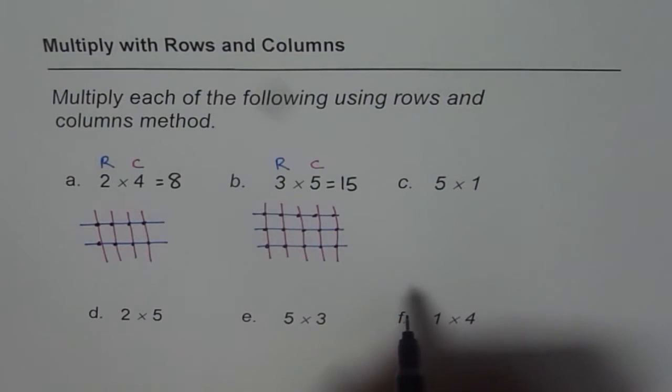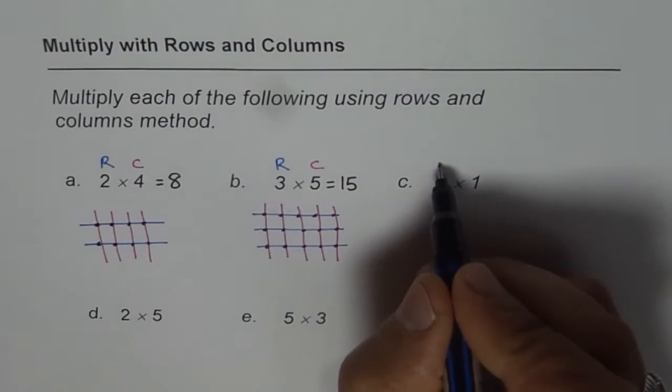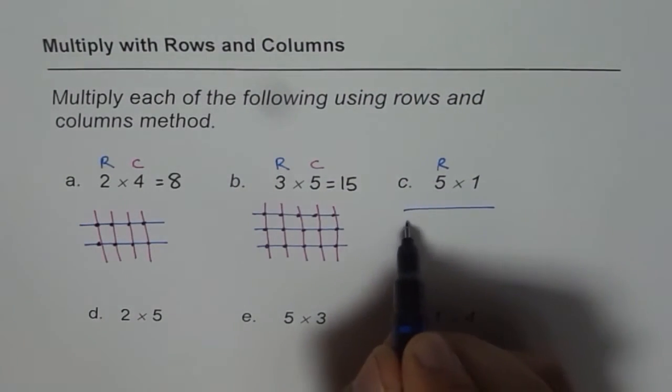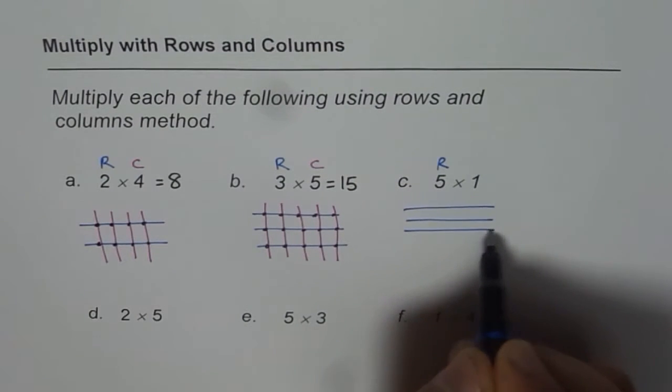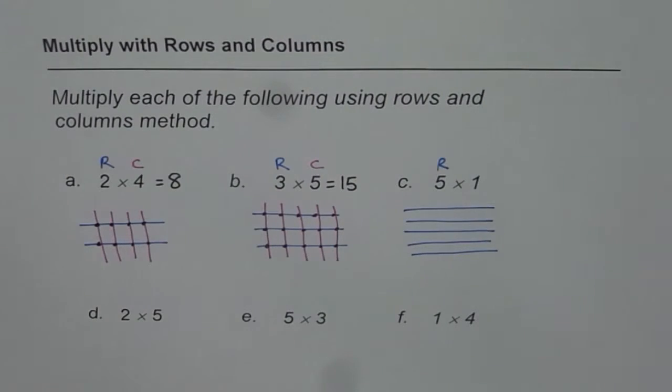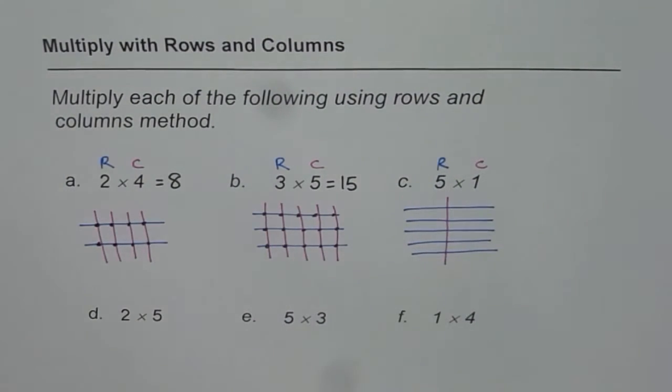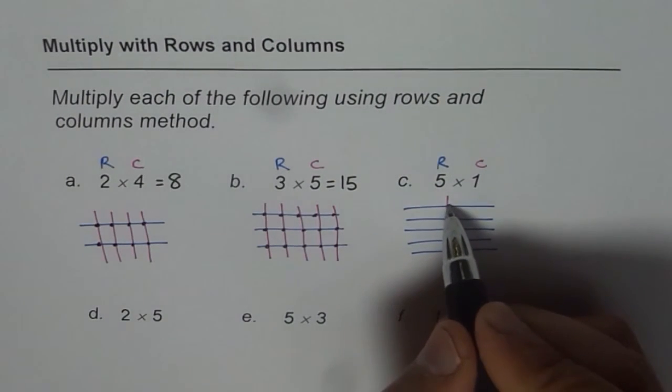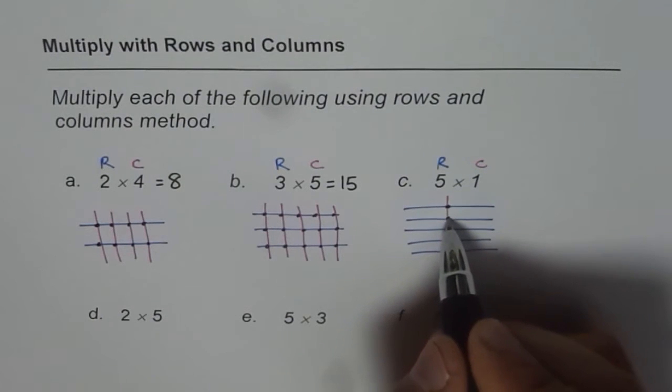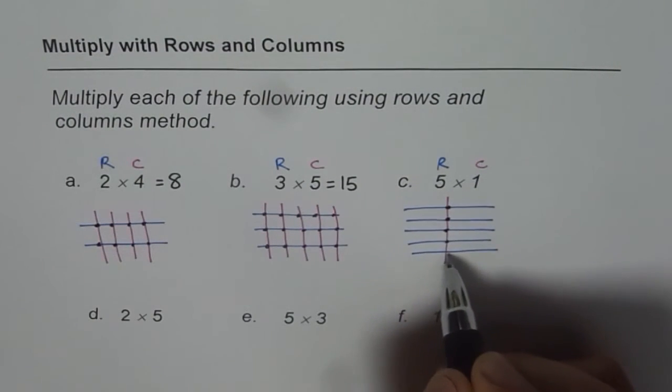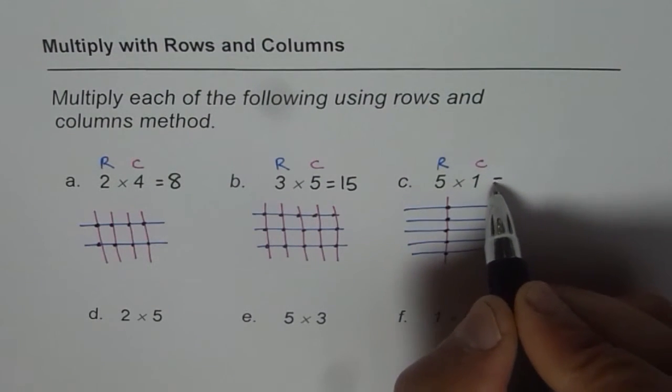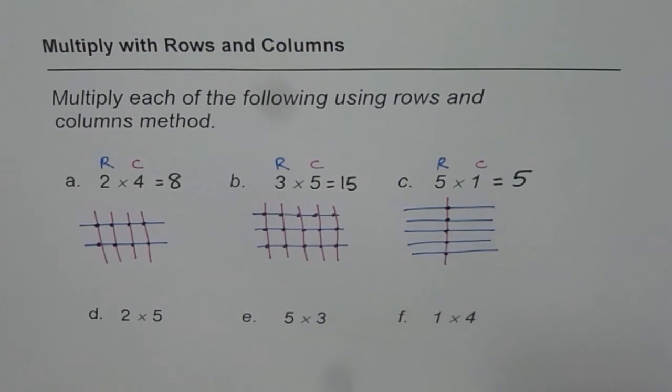5 times 1, that is tricky. 5 rows means 1, 2, 3, 4 and 5. And just 1 column. 1 column means 1 line, right? 1 vertical line. Lines intersect at a point. Let us count them. 1, 2, 3, 4 and 5. So 5 times 1 is equal to 5.